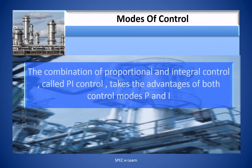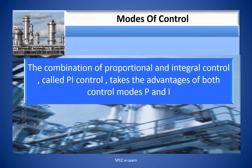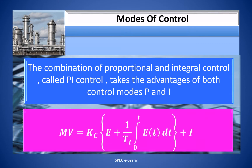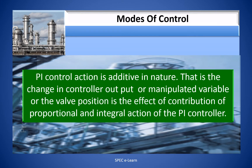The combination of Proportional Integral control, called PI control, takes advantage of both control modes — proportional and integral. The MV in the proportional integral mode is expressed as: MV = Kc × [e + (1/Ti) × integral from 0 to t of e dt] + i. The PI control action is additive in nature — that is, the change in control output or manipulated variable or valve position is the combined contribution of proportional and integral action of the PI controller.